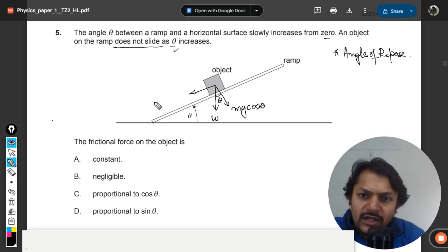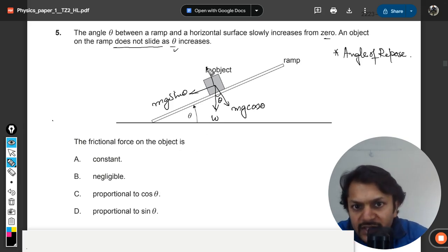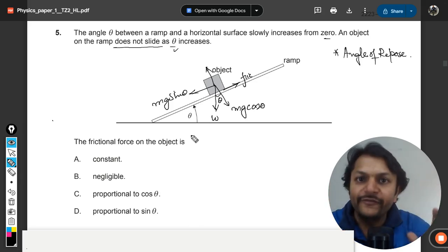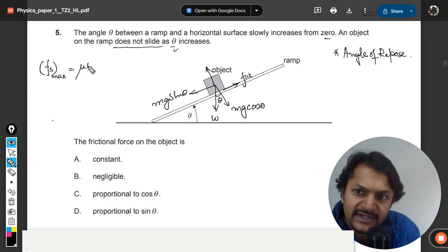This theta will always be equal to this theta, so this will be mg cos theta, this will be mg sin theta. So now the normal reaction will be equal to mg cos theta, and friction is in the backward direction. Now be careful, we know a formula which is fs max and that is given by mu normal reaction. So mu s, the normal reaction N is equal to mg cos theta, so fs max is equal to this.